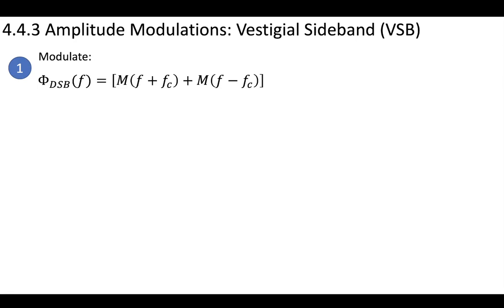So we take our message, we multiply it by that carrier cosine. Then we have a DSB signal. And we've seen this quite a few times. Looks like this. And we have our message shifted out to plus or minus FC, just like we've seen before.